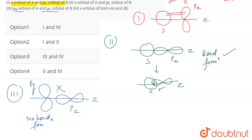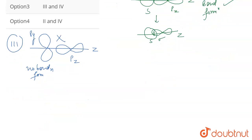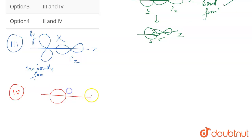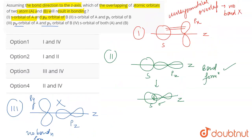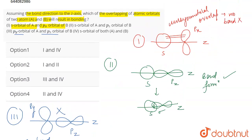The fourth case involves the s orbital of both atoms A and B along the z nuclear axis. The s orbitals of both atoms can combine and lead to overlapping with the formation of a sigma bond. So bond formation can take place here — the s-s overlap is a valid bonding case.